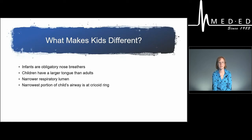First, I want to go over what makes kids different — how are kids different than adults and what makes their airways more difficult or easier to maintain? Infants are obligatory nose breathers, and that'll be important later when we talk about specific diseases such as bronchiolitis. Until they're about six months of age, they breathe primarily out of their nose. If the nose is occluded with a lot of mucus or tubes and devices, it makes it hard for them to breathe.